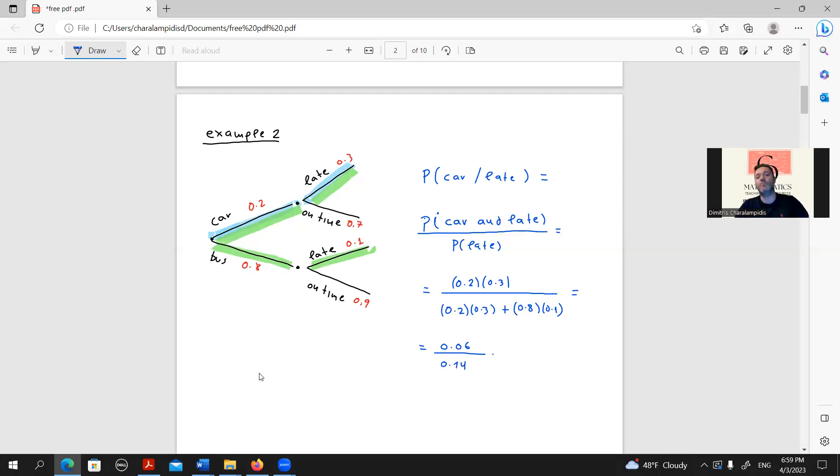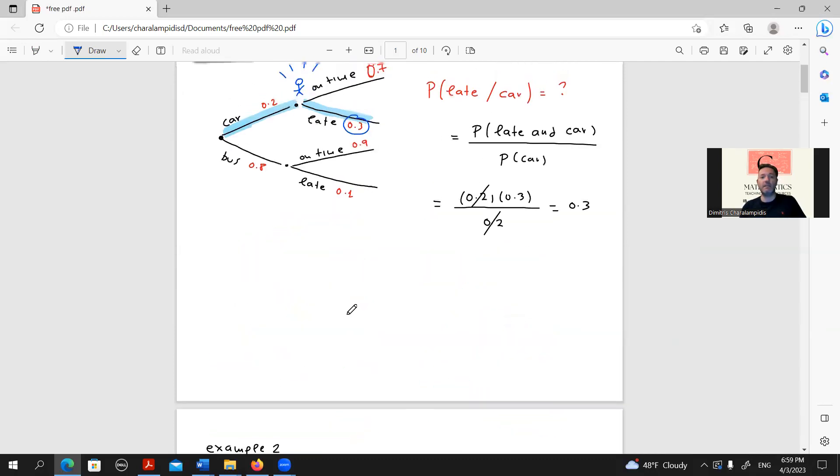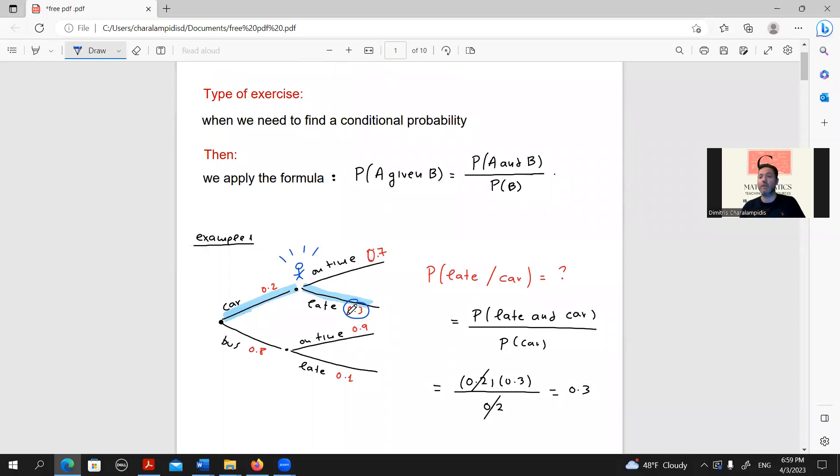So, once again, to summarize what we saw, remember that in case of conditional probability, always apply the formula. You don't necessarily need it always, as we saw in example one, but it's certain that the formula works always.